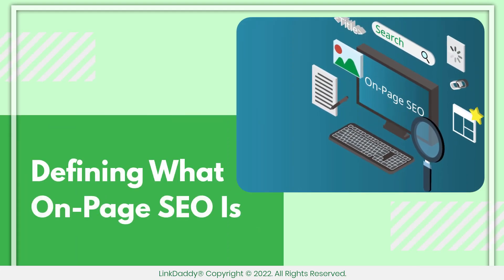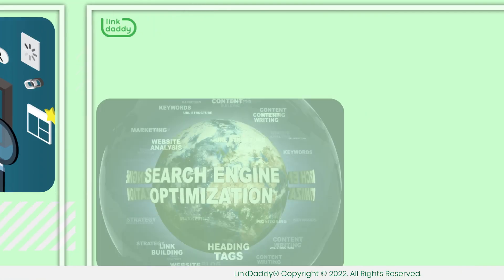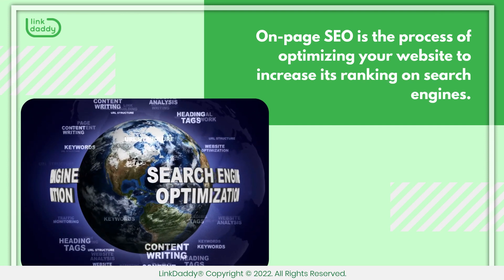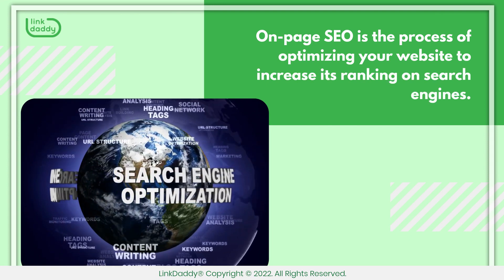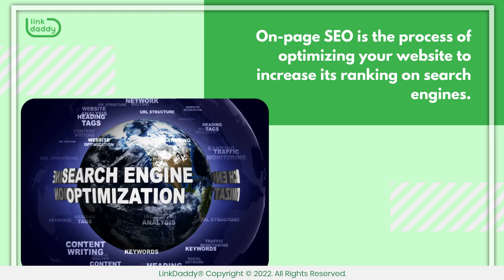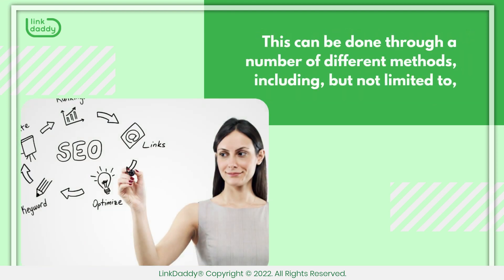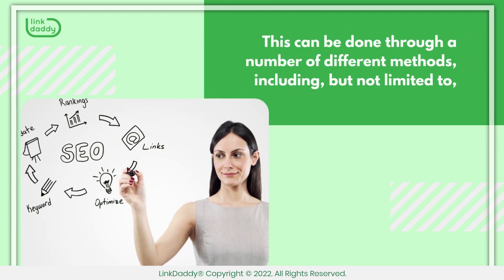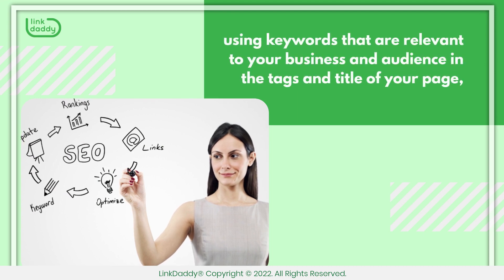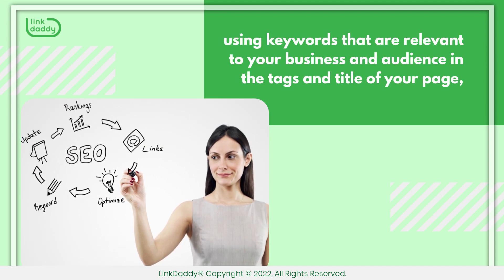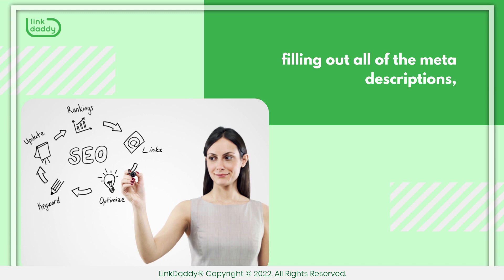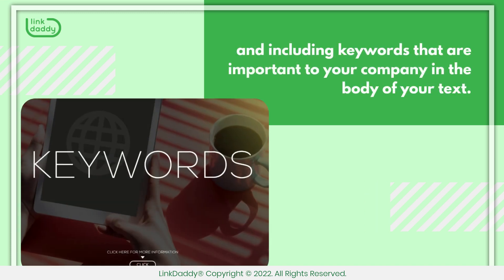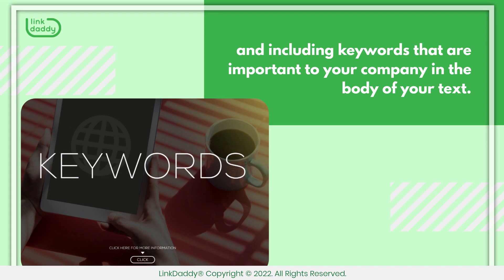On-page SEO is the process of optimizing your website to increase its ranking on search engines. This can be done through a number of different methods, including using keywords relevant to your business and audience in the tags and title of your page, filling out all of the meta descriptions, and including keywords important to your company in the body of your text.